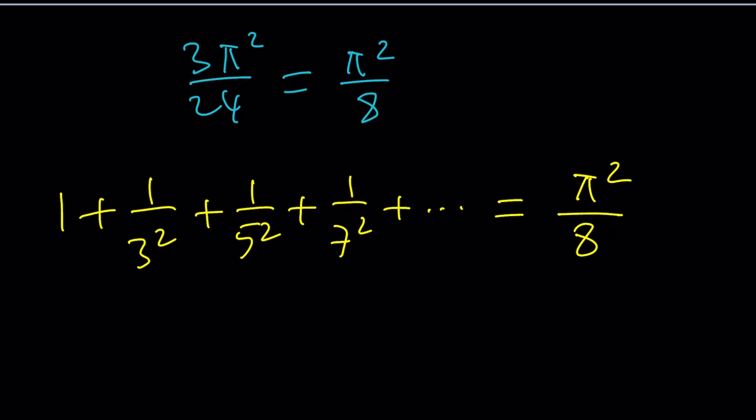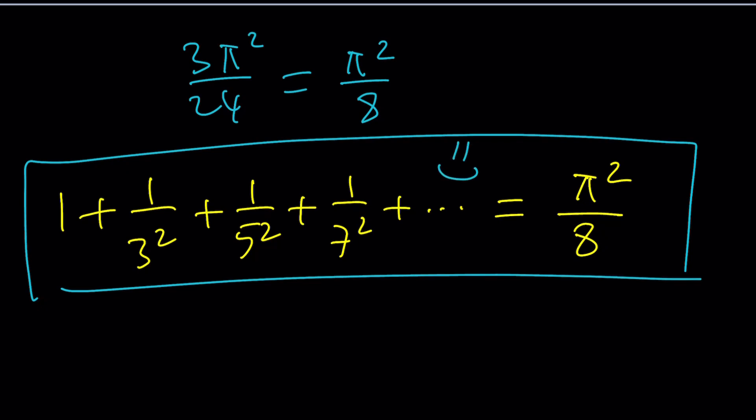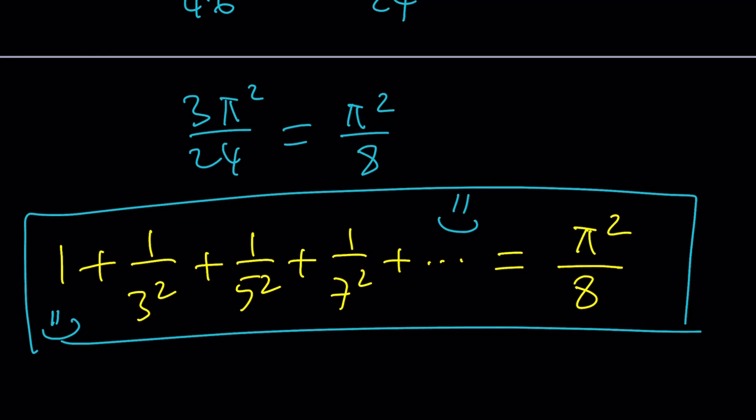So the conclusion: 1 + 1/3² + 1/5² + 1/7² + ... all the way to infinity equals π²/8. This brings us to the end of this video. Thank you for watching. Don't forget to comment, like, and subscribe. Until then, be safe, take care, and bye bye.